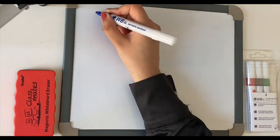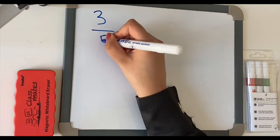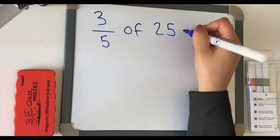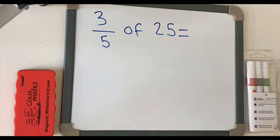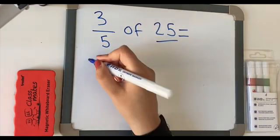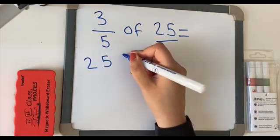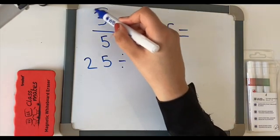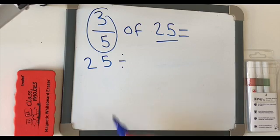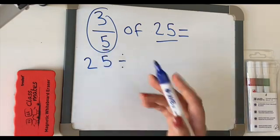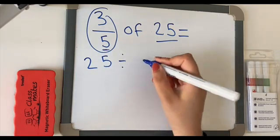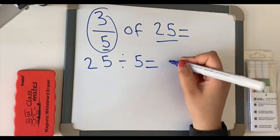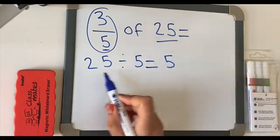So if I start off with this, three-fifths of 25. We get our whole number, which is 25. We then divide it by our denominator. Our denominator in this fraction is the number five at the bottom, just there. So we'll do 25 divide it by 5, which is 5, because 5 times 5 is 25.